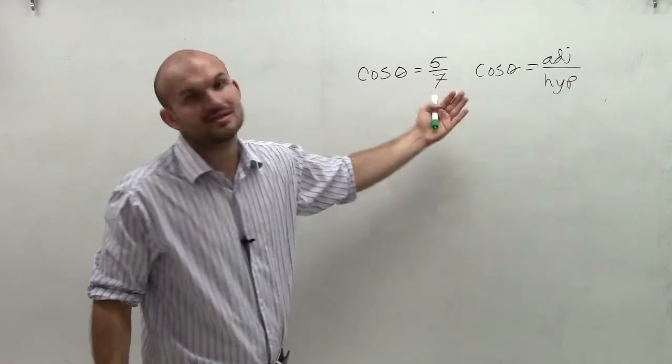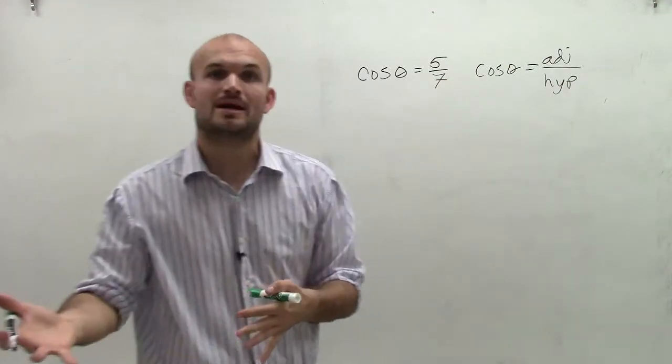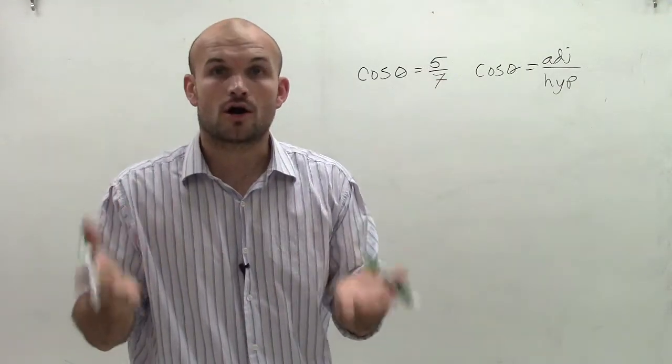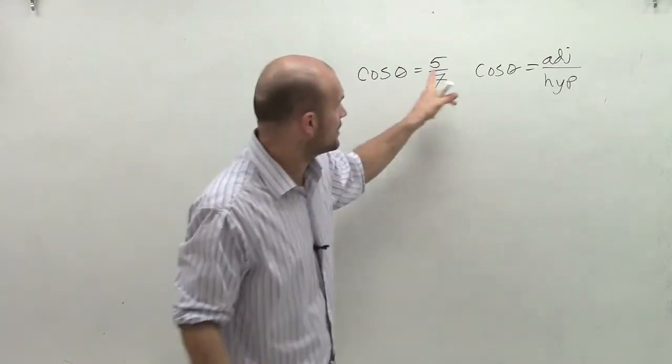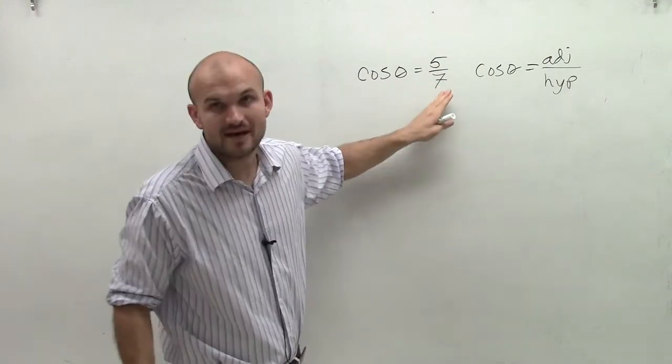So when I look at this, I know that this point's not on the unit circle. And remember, it was nice when we had points on the unit circle because our hypotenuse is always 1. Here, our hypotenuse is not going to be 1, though. So it's going to be 7.